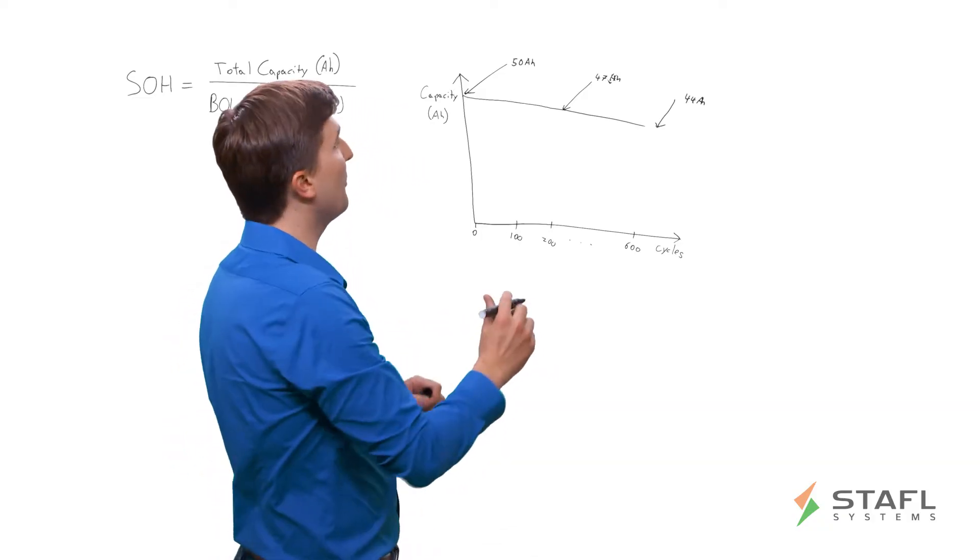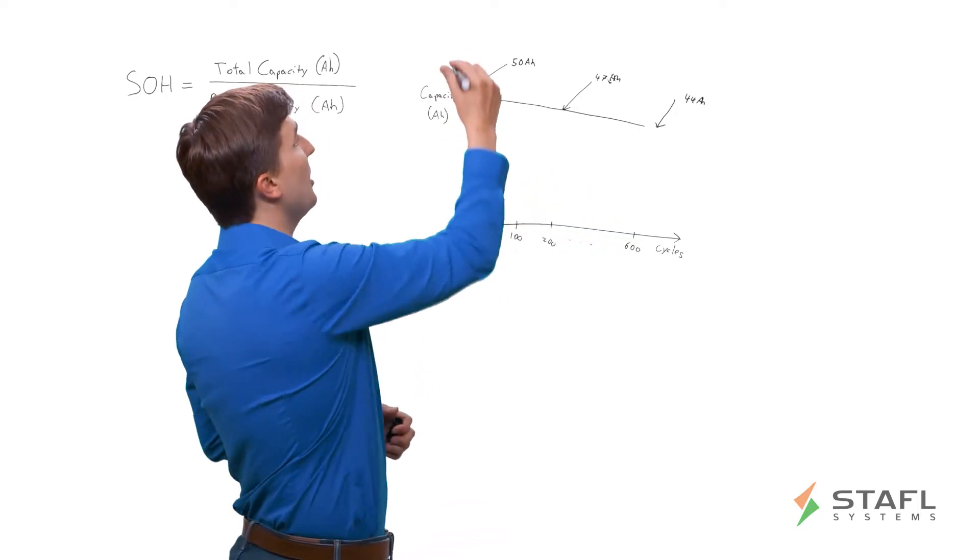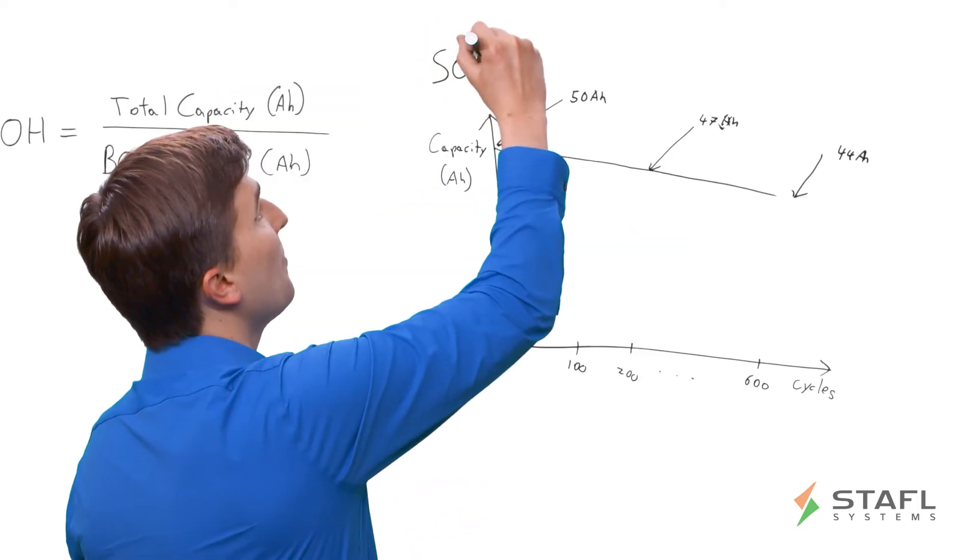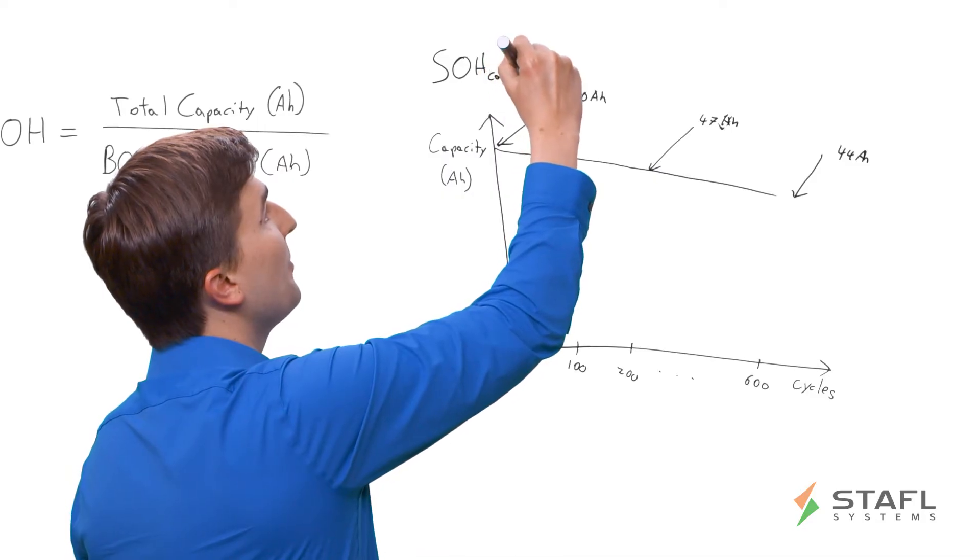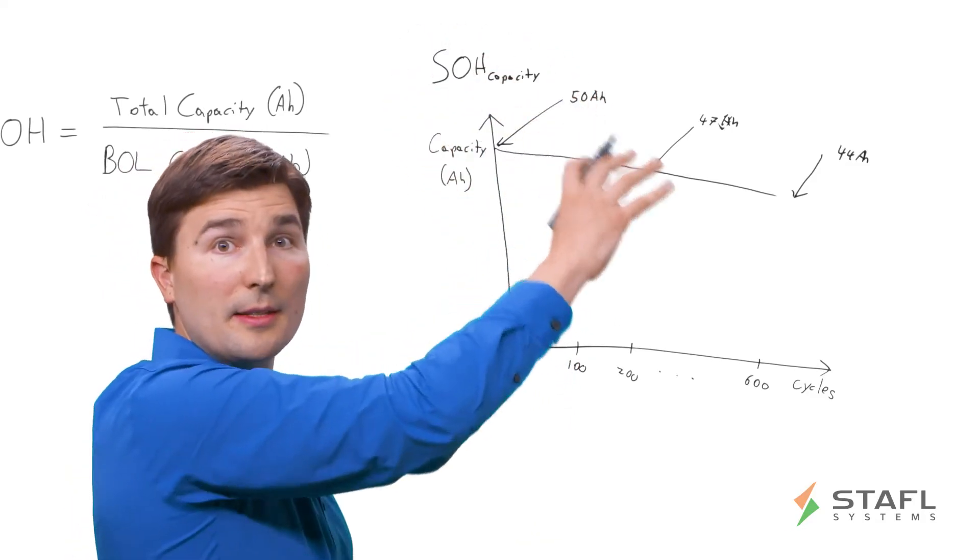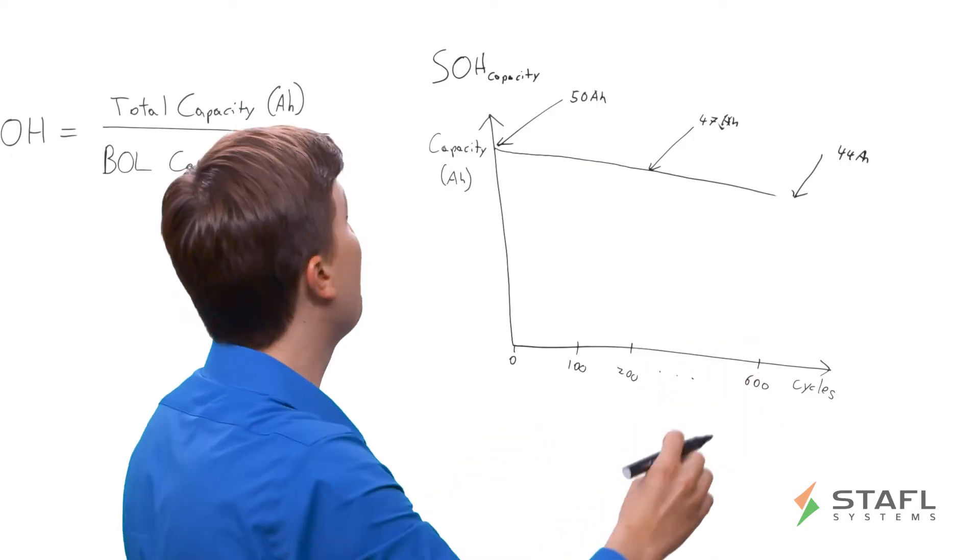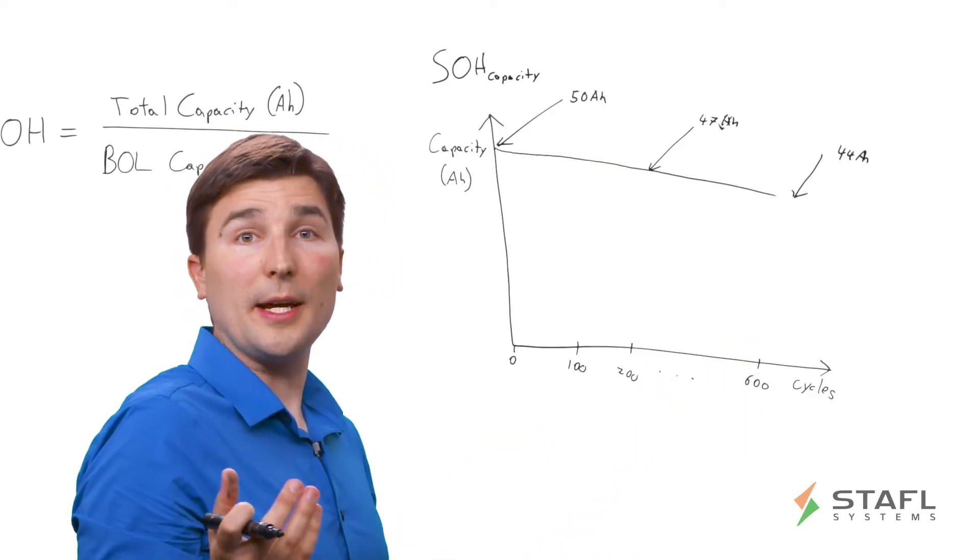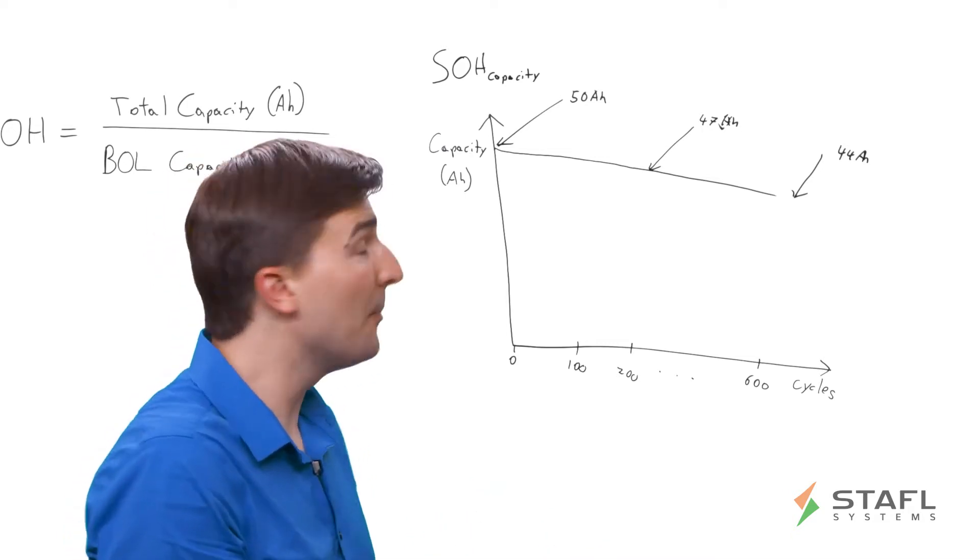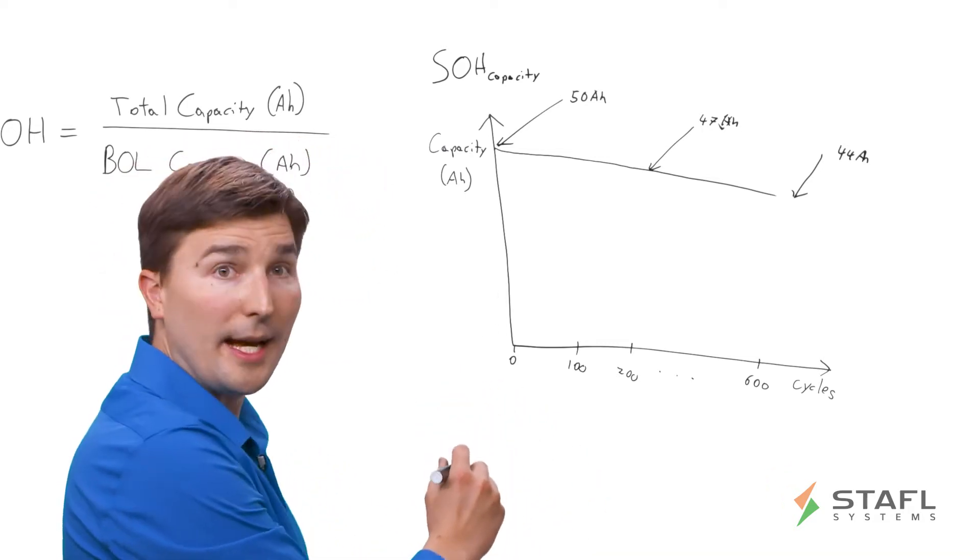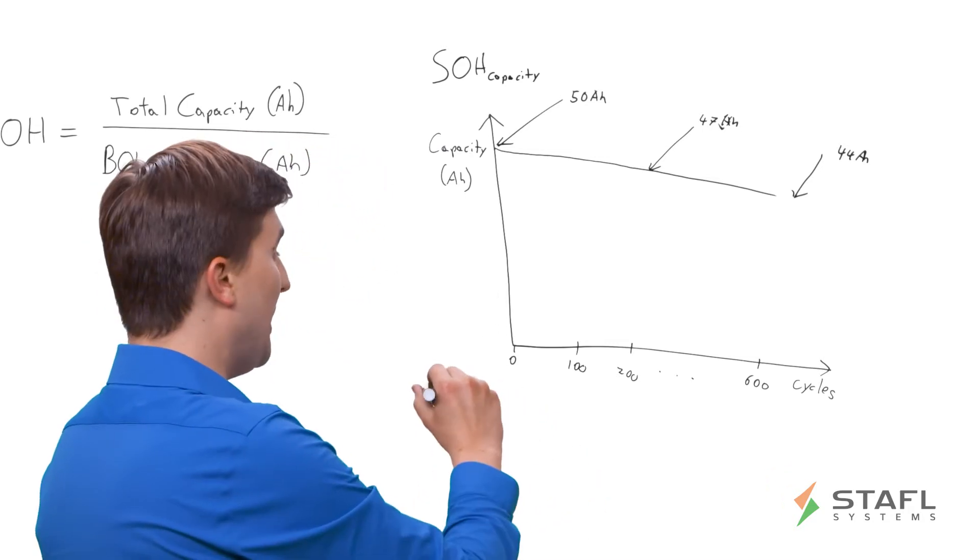So from now on, I'm going to refer to this state of health, what we just talked about, as state of health capacity. So this is the effect of capacity fade over time. But there's also another effect that can be calculated in an algorithm, in a BMS, that's very helpful as well. And I'm going to refer to that as state of health impedance.